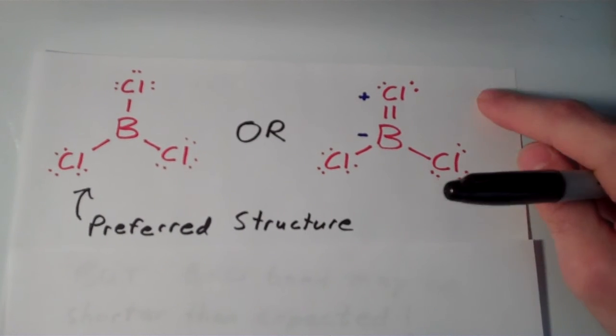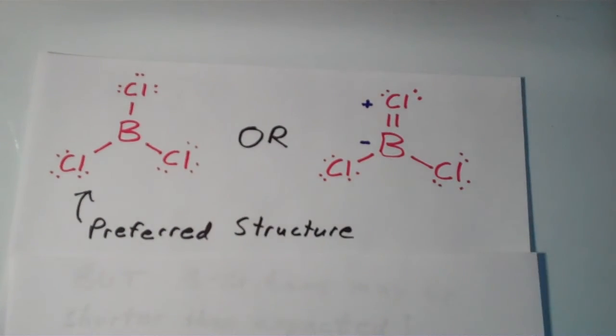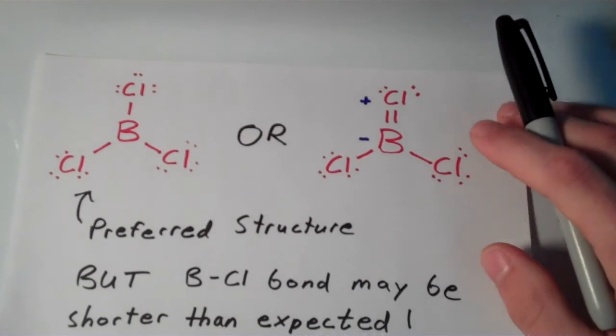It turns out that the structure that has the incomplete octet is the preferred Lewis structure. It's the most commonly accepted structure.